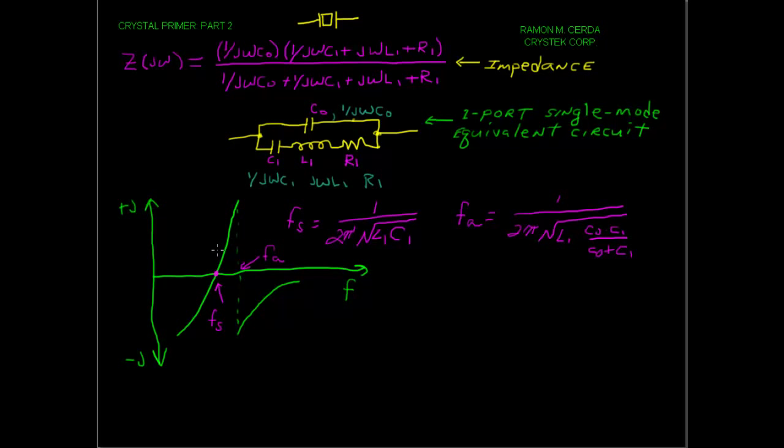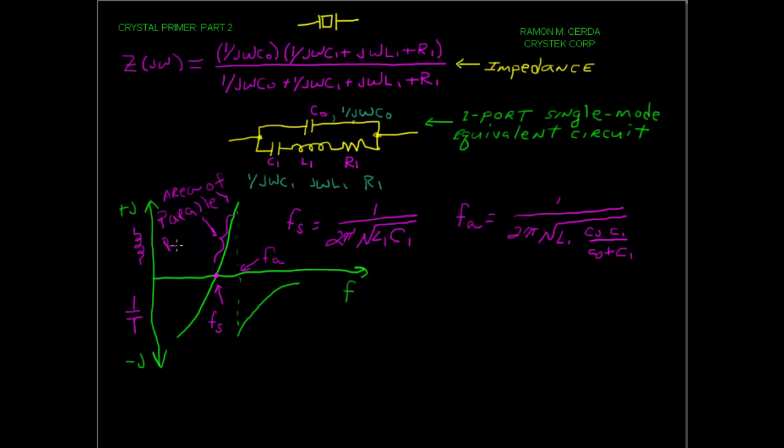So, this area here is inductive, so we can represent this plus J here as an inductive region. Minus J, as you recall, is a capacitive region, so we can put a capacitor here as a symbol to see that more clearly. This area here is called area of parallel resonance.